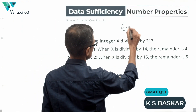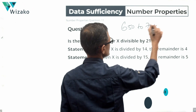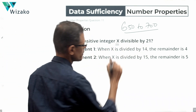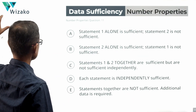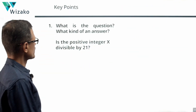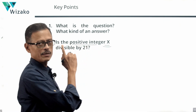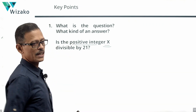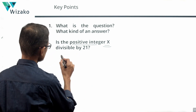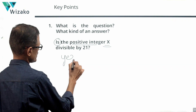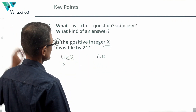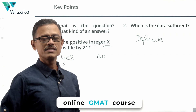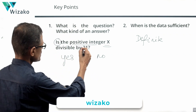This question is a GMAT 650 to 700 level Data Sufficiency question — number properties and divisibility are what is tested. The question asks: is the positive integer x divisible by 21? The answer to such yes/no DS questions is sufficient when we have a definite yes or a definite no.